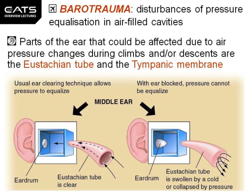If we now descend, the pressure outside our ear will increase and air will want to enter via the eustachian tube to reach the lower pressure inside the middle ear, so that the pressure across the tympanic membrane or eardrum can be the same. Generally speaking, this pressure equalisation system via the eustachian tube works very well in climbs and descents under normal conditions.